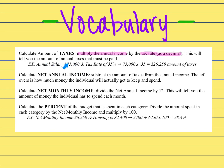For example, take an annual salary of $75,000. The percentage is 35%, so it would turn into 0.35. Anytime you get your percent, you divide it by 100. That gives us our percentage, and then the amount of money you get is what you pay in taxes.